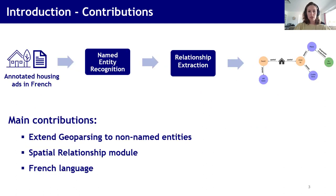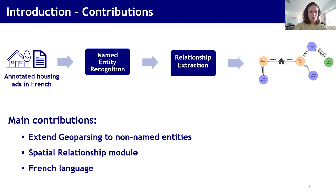To extract spatial information from text and build a structured knowledge base, we propose a workflow based on two techniques. First, named entity recognition, and then relationship extraction. Named entity recognition applied to geography is called geoparsing, and geoparsing applications are mainly focused on place names or toponyms. However, they also have non-named entities that can describe the location, so we extend geoparsing to non-named entities. Second, we develop a relationship extraction module, and in particular for spatial relationships. Our last contribution is that the workflow is applied to French text, which has limited resources.